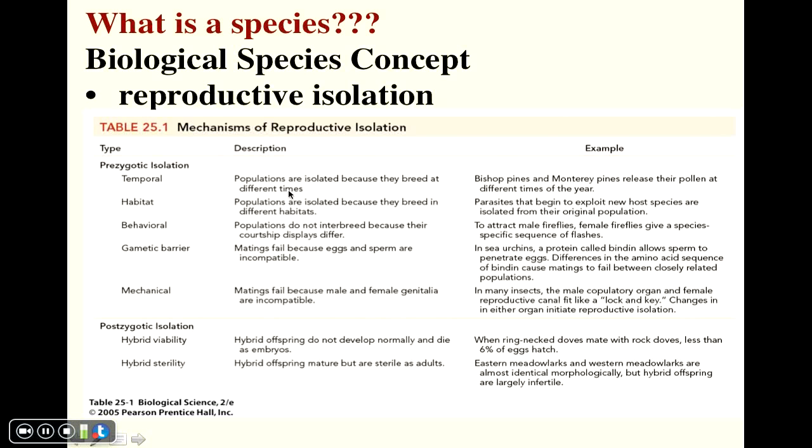For example, populations often are reproductively isolated simply because they breed at different times or perhaps different locations. Or individuals might display different courtship behaviors or sperm and eggs simply might not be capable of fertilizing each other.